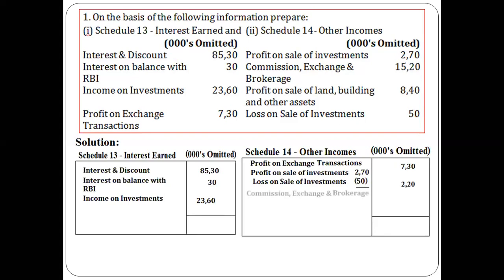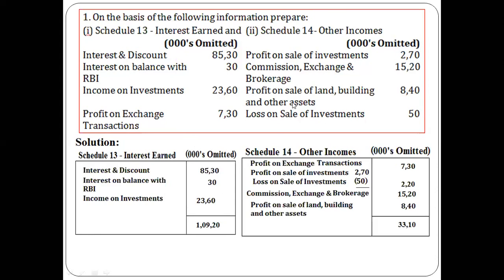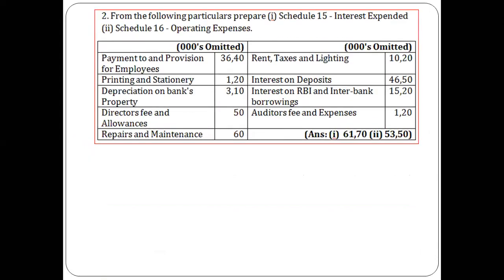Commission, exchange, and brokerage is a Schedule 14 other income item. Profit on sale of land and building is 840, also Schedule 14. Once all items are entered, we sum both schedules: Schedule 13 totals 10,920 and Schedule 14 totals 3,310. Always bear in mind that three zeros are omitted throughout, as prescribed by the Banking Regulation Act 1949 format for preparation of bank accounts.